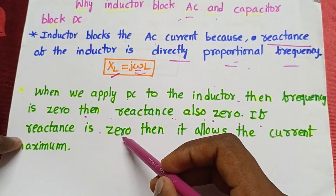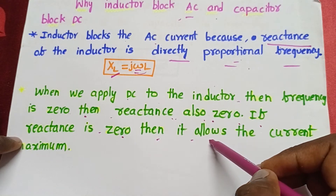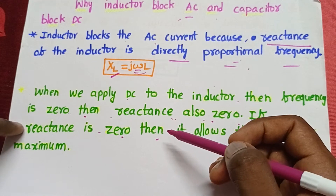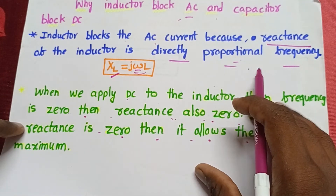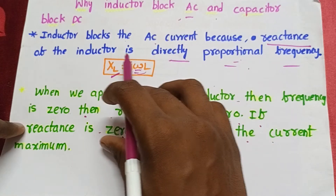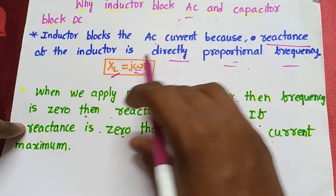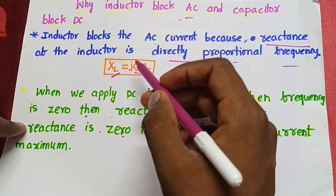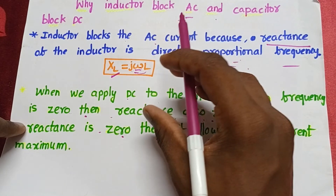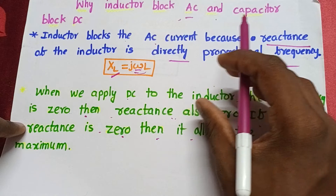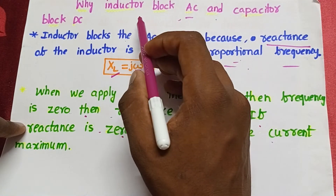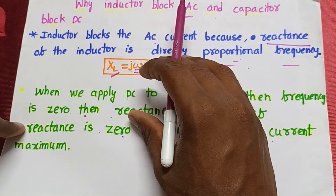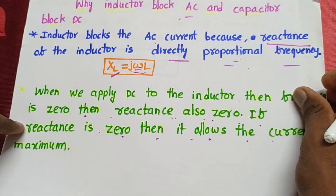If reactance is zero, then it allows the current maximum — the complete total current flows in the inductor. If the reactance is maximum, then the inductor does not allow the current. This is why the inductor blocks AC and allows DC current.